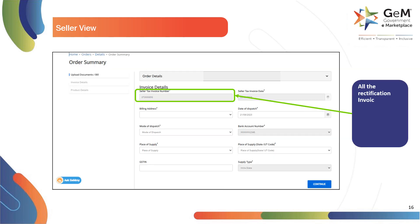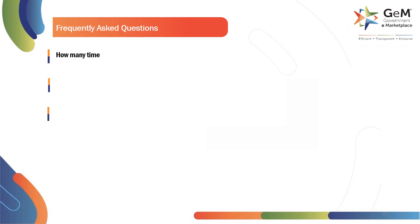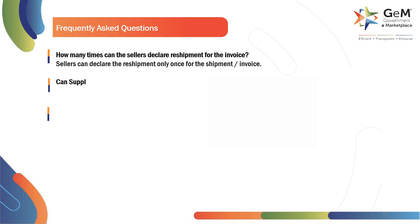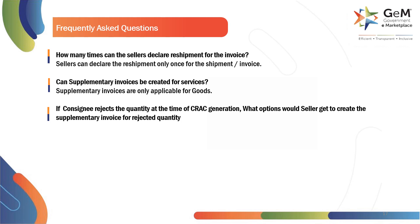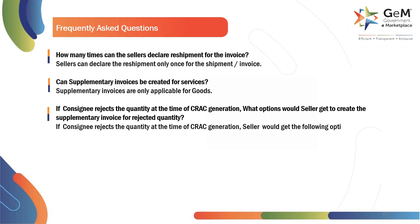All the rectified invoice details page will preview the reference of the previous invoice. How many times can sellers declare reshipment for the invoice? Sellers can declare the reshipment only once for the shipment invoice. Can supplementary invoices be created for services? Supplementary invoices are only applicable for goods. If the consignee rejects the quantity at the time of CRAC generation, the seller would get the following options to create the supplementary invoice for the rejected quantity.